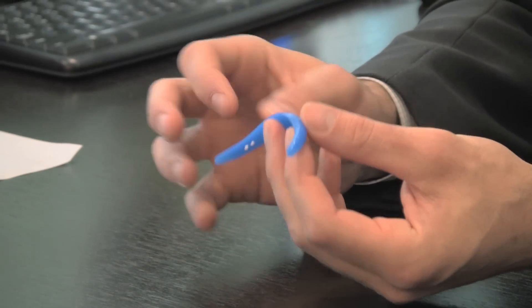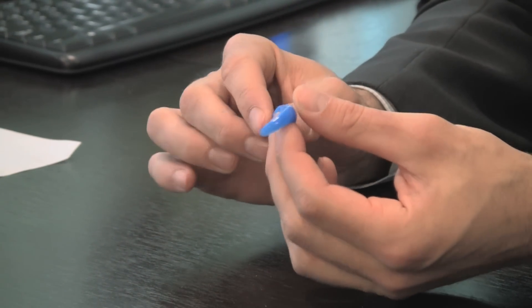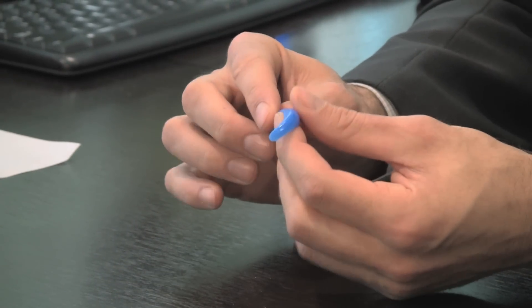The chin implant is a solid material. It's made out of solid silicone, and it has enough density and strength to actually physically move the soft tissues of the neck forward. So this is an example of a chin implant.